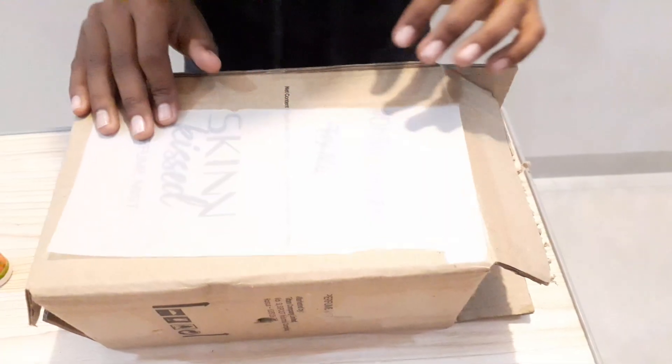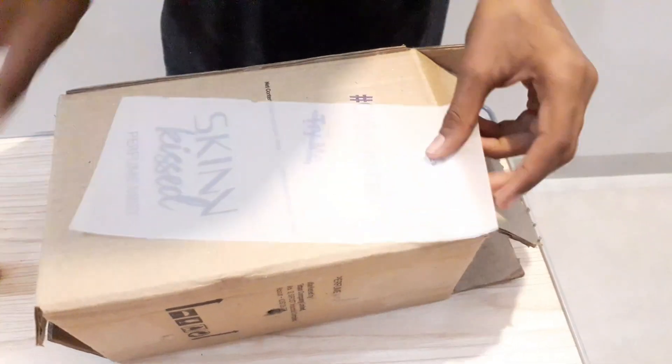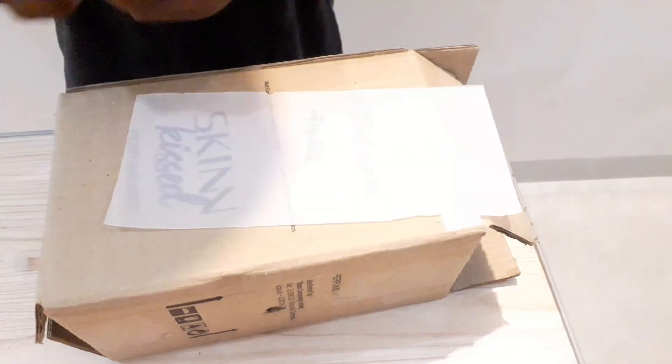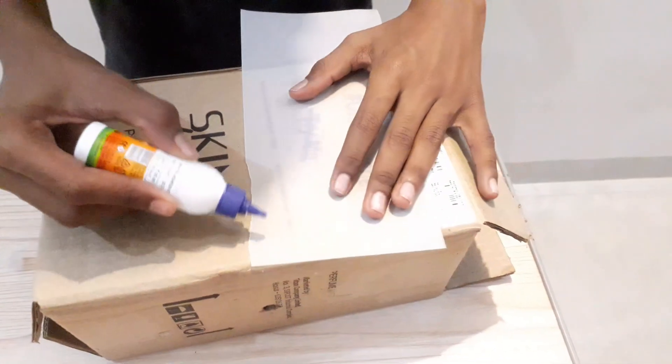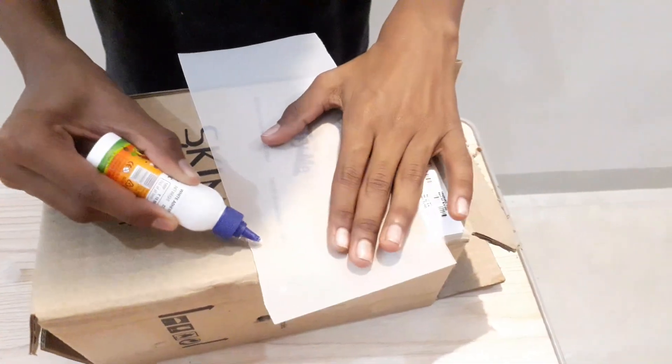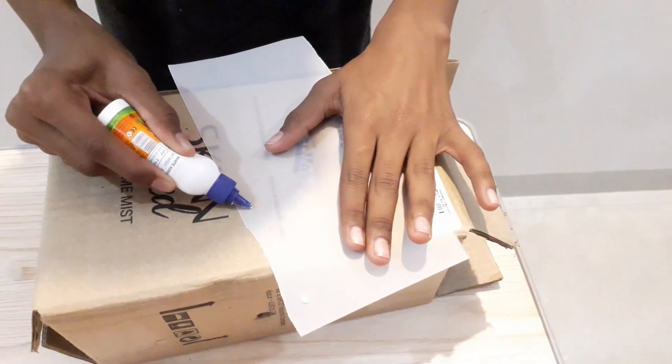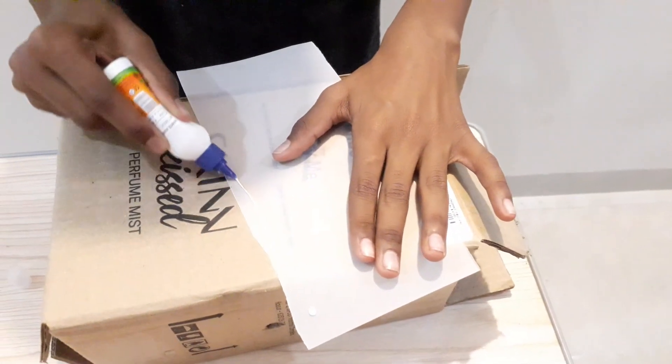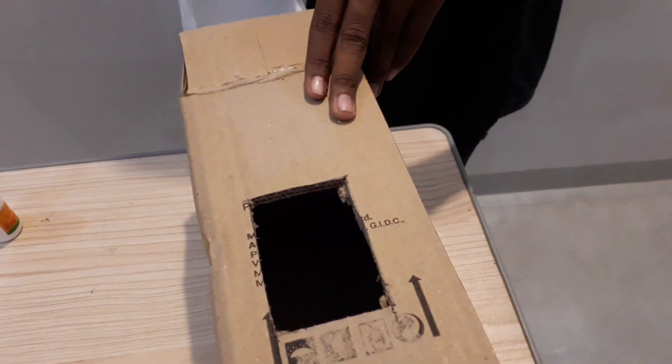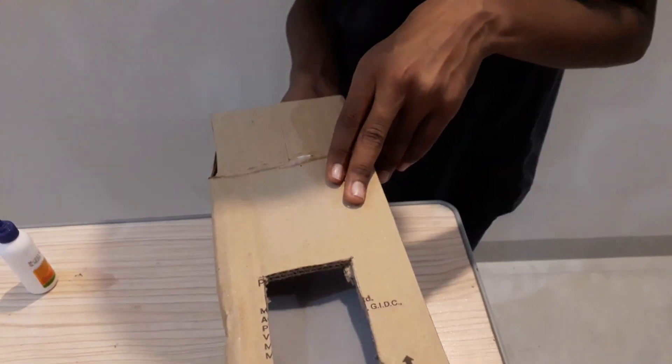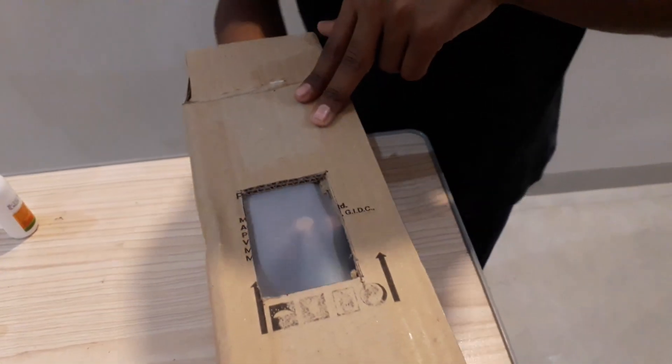After tearing the translucent paper, take the paper, add the glue to the edges. Remember not to add in the center. Now place the tracing paper exactly into the cardboard box.